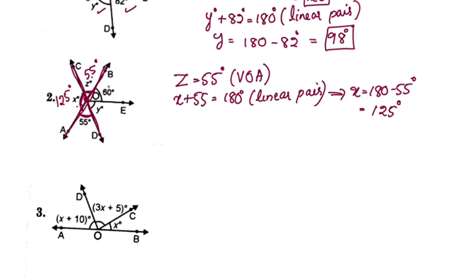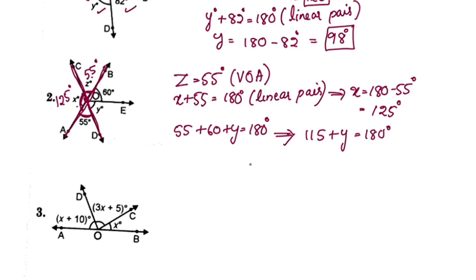Y is equal to 180 degrees. Z is 55 degrees. 60 plus 55 is 115, so 115 plus y is equal to 180 degrees. Y is equal to 180 minus 115 degrees. Y is equal to 65 degrees.